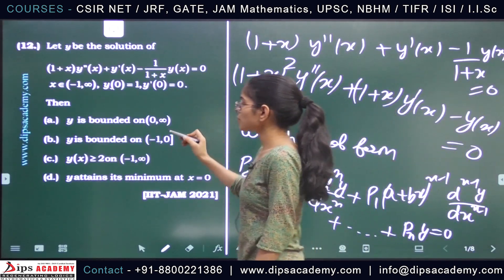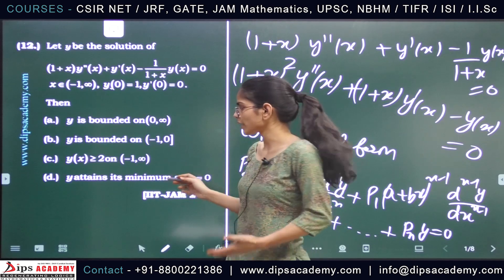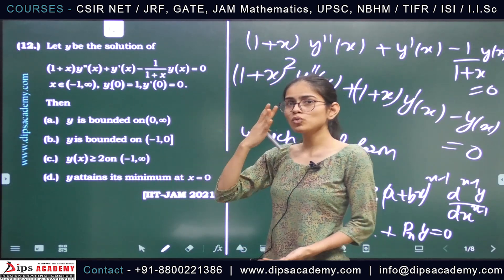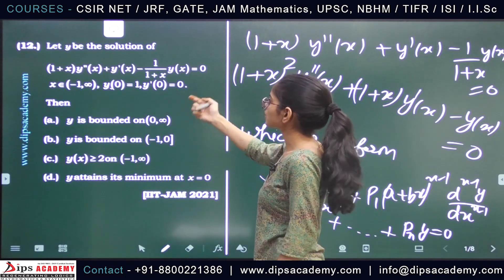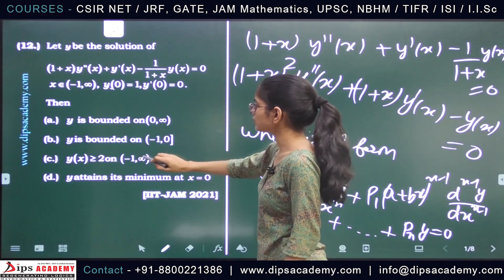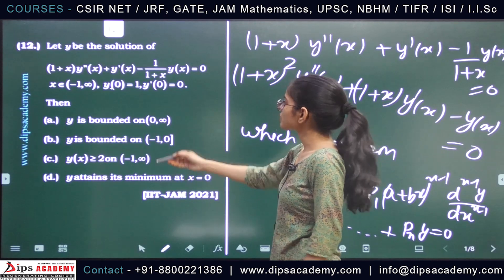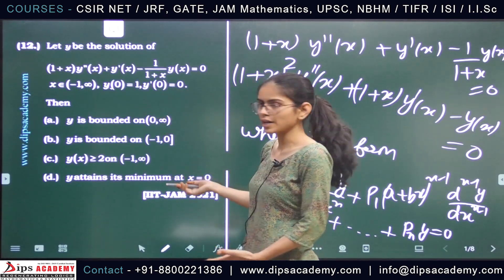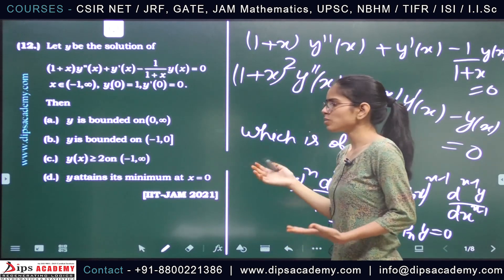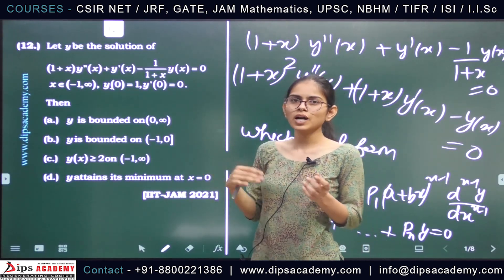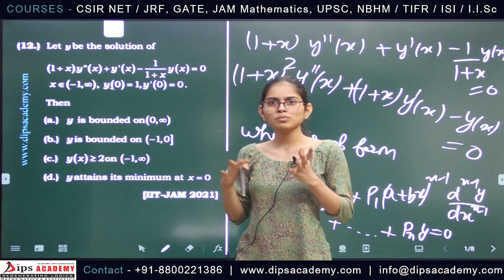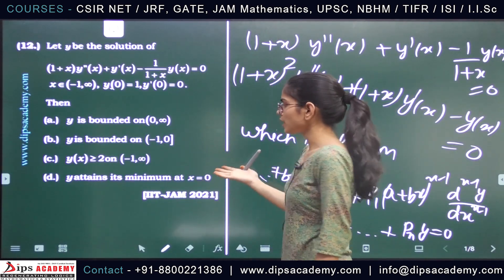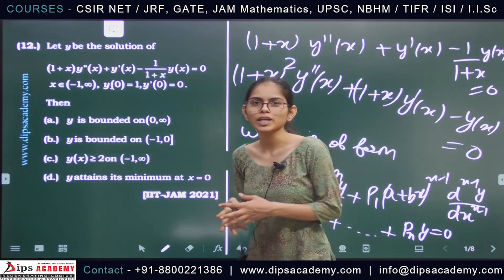Since options A, B, and C are incorrect, option D is the correct answer. In an exam, you can often discard options directly from the initial conditions — for instance, option C is immediately ruled out since y(0) = 1. Reading the question carefully can save time, as one or two options may be discarded from the problem statement itself.